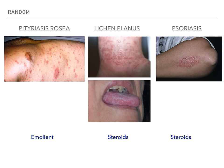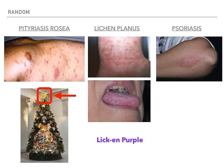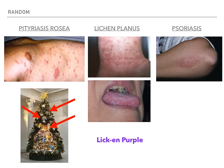Mnemonic time: for pityriasis rosea, we use the Christmas tree — one big ornament at the top that then becomes smaller ornaments going down, mimicking the herald patch spreading into a Christmas tree distribution. For lichen planus, instead of planus, think lichen purple — 'lick' reminds you of Wickham striae in the mouth, and 'purple' reminds you of the purple lesions. For psoriasis, no special mnemonic — it's always on the extensor surface, just don't forget that.